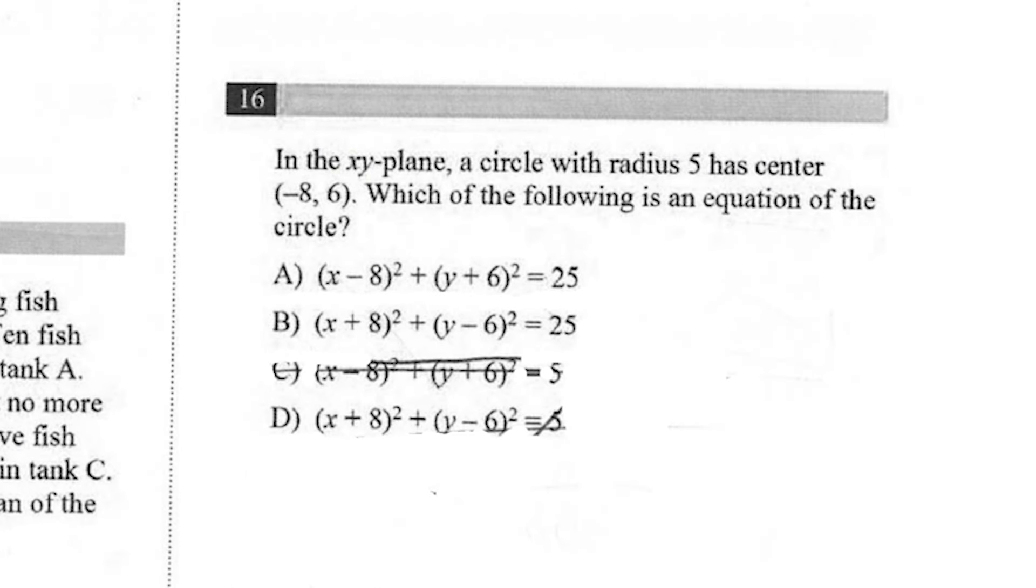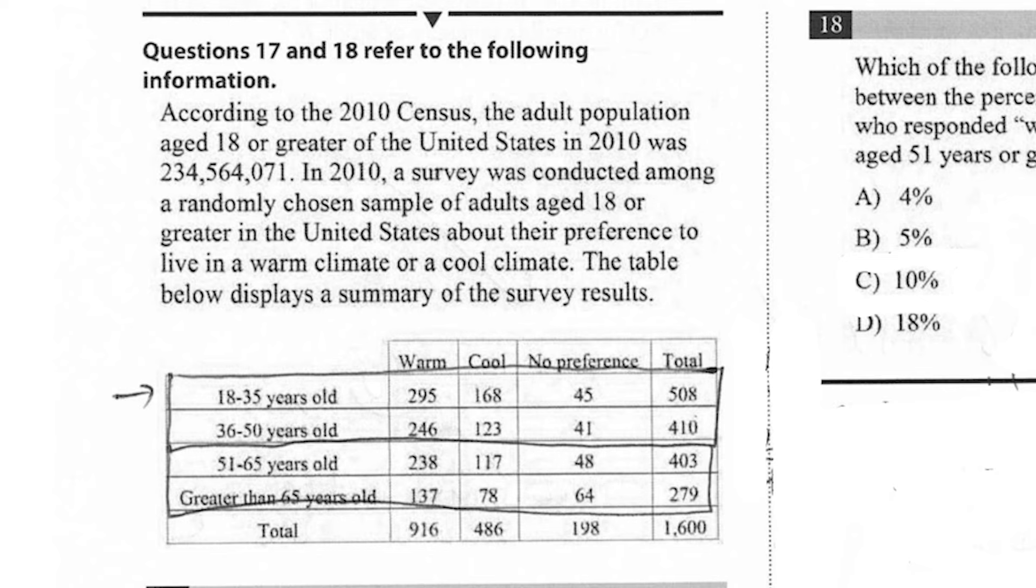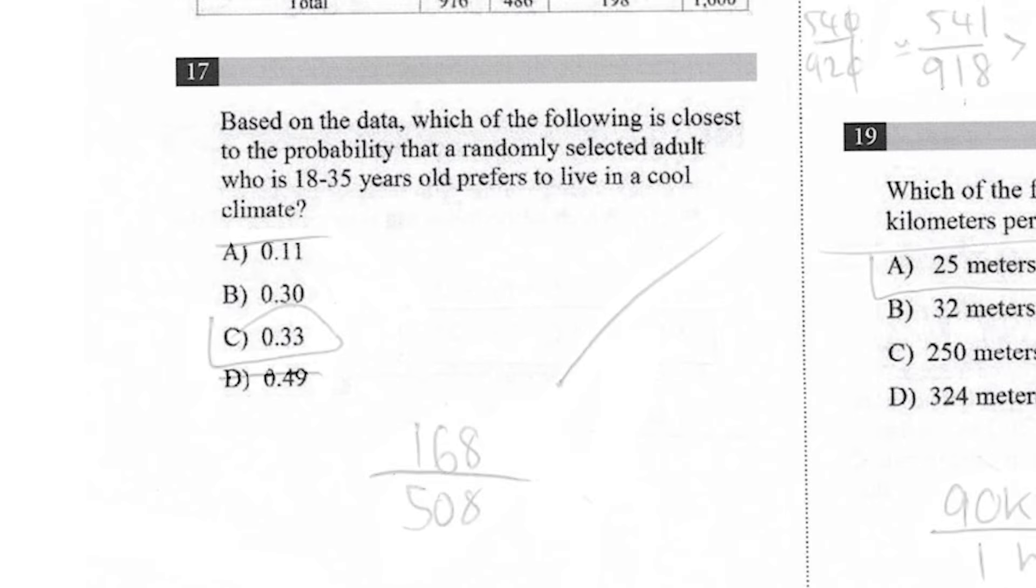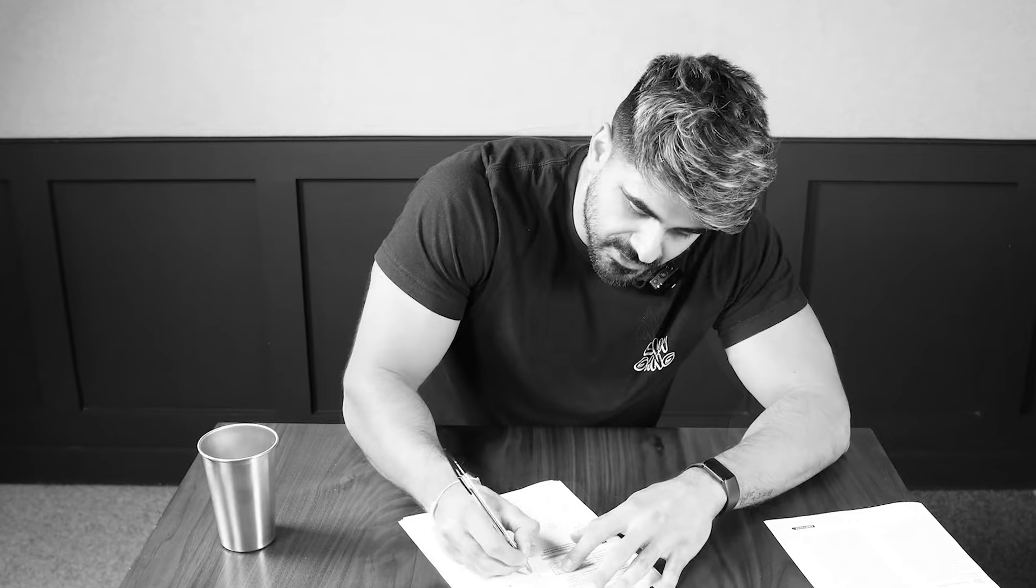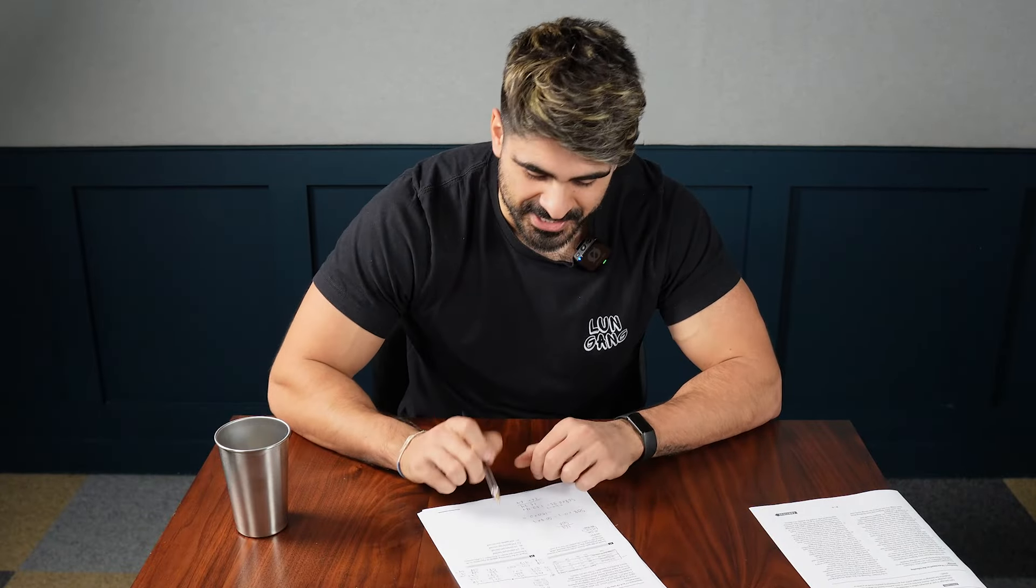In the X, Y plane, a circle of radius five has this center. Which of the following is an equation? So it can't be C or D because it's R squared. And it has to be X plus eight. According to the 2010 census, the adult population aged 18 or greater in the USA was, I ain't even reading that. The answer is C. Which of the following is the closest to the difference between the percentage? 508, 409, 5, 10, 14, over 918. I'm going to go with C. I think it's about 10%. I think logic is sound there.